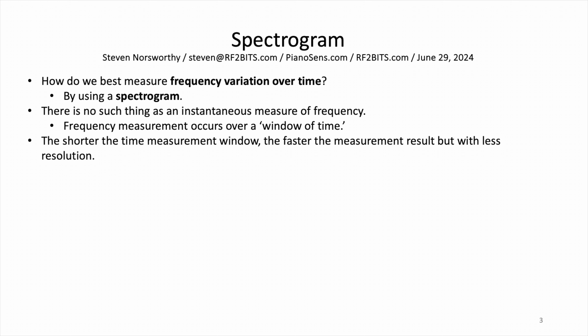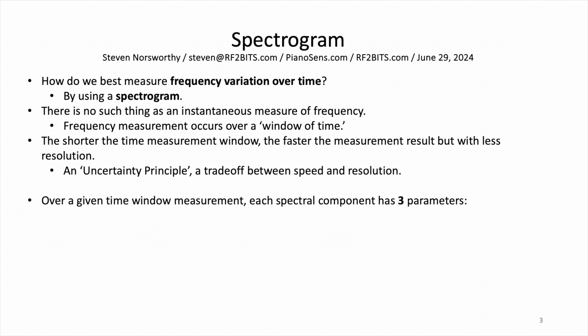The shorter the time measurement window, the faster the measurement result, but with less resolution. This is an uncertainty principle — a trade-off between speed and resolution. Over a given time window measurement, each spectral component has three parameters: frequency, amplitude, and phase.